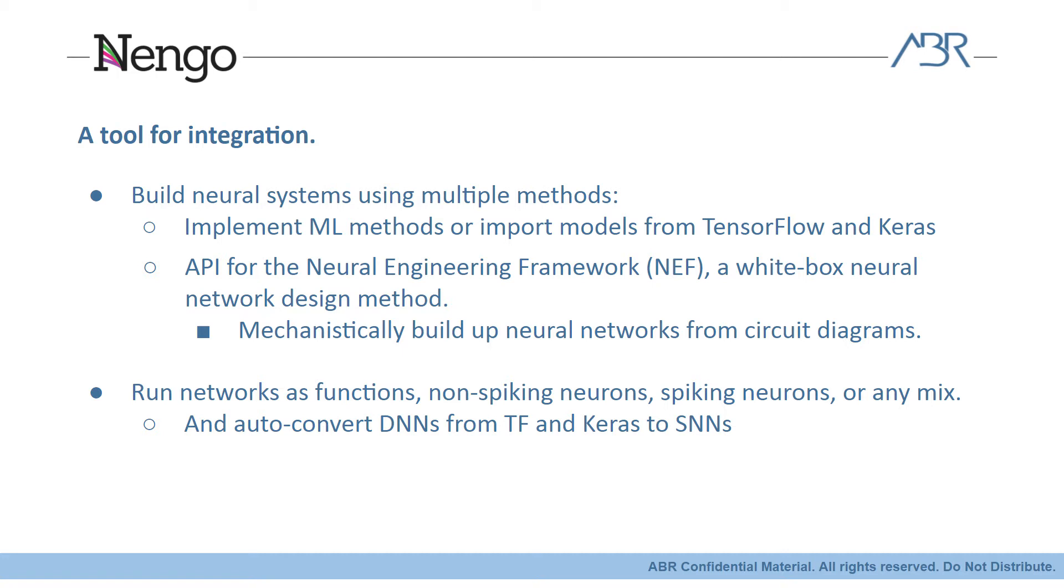Complex networks can have a lot of different components performing different functions. It's often very helpful to modularly be able to switch between running different sections as straight Python code, non-spiking or rate mode neurons, and spiking neurons during the building and debugging process. As part of this, if you've integrated a network that was built in TensorFlow or Keras, it was designed to only run in non-spiking neurons. So, having tools to help convert that network to spiking neurons is also very useful.